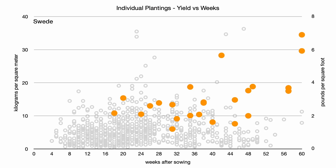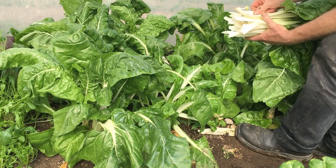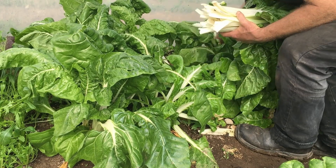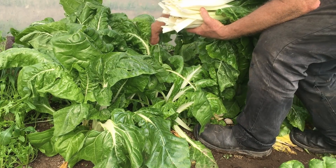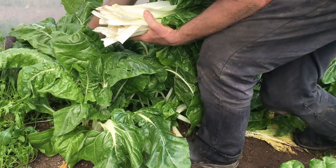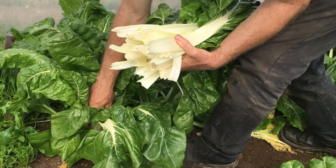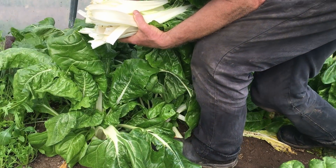The chard crops, in comparison, are some of the longest growing crops in the gardens, with the two largest yields from plants that were growing in the polytunnel for more than a year before they started to bolt. But even in the outside gardens, these chard plants can produce quite an impressive yield, and are definitely worth growing for their reliability and consistency, but perhaps there are other plants that are significantly more productive in a shorter period of time.